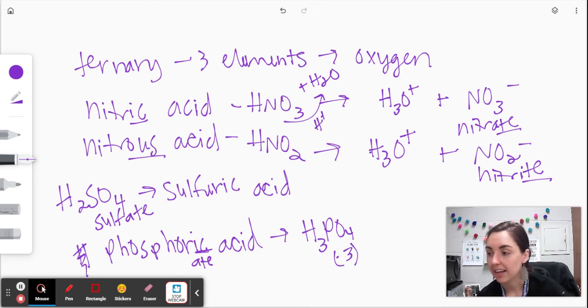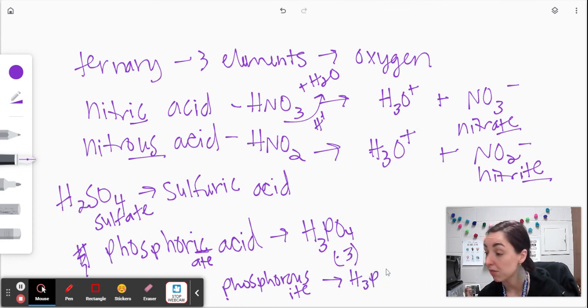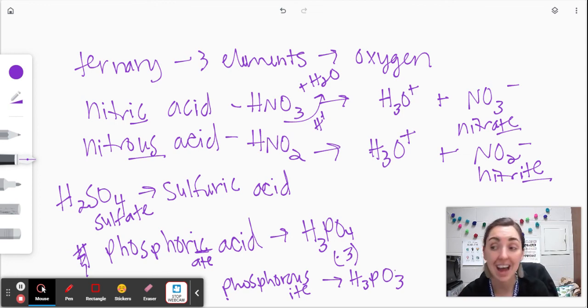Now, what if I had given you phosphorous acid? Phosphorous acid comes from the ite ion. So I'm looking for phosphite. So that would instead be the H3PO3. Phosphite still has the same charge, it's still minus three, but the formula is PO3 instead of PO4. And that's why we write names and formulas for acids.